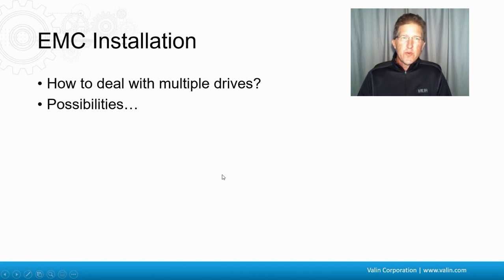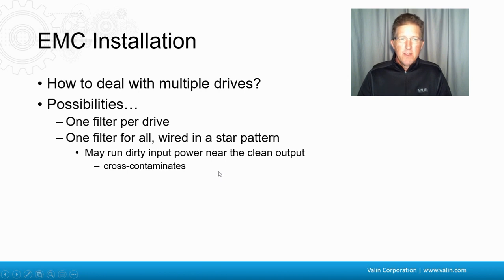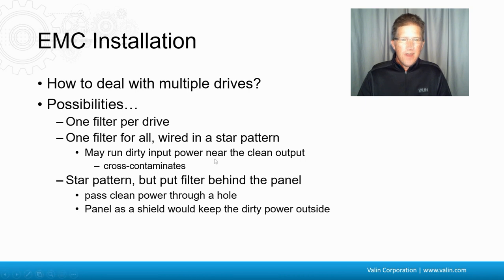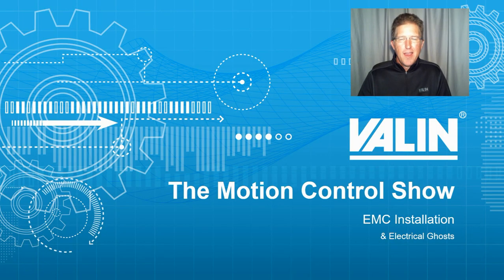If you have multiple drives, there are a couple of possibilities. One filter per drive can get expensive. Another option is one filter for all drives wired in a star pattern, but you may end up running dirty input power near clean outputs, which cross-contaminates. A good theoretical approach is wiring in a star pattern with the filter behind the panel, running clean power through a hole so the panel acts as a shield. Key dangers to be aware of: running high-power cables next to low-power cables — keep a significant gap or run them perpendicularly — and contaminating clean power with dirty. I've solved a lot of electrical noise issues just by doing a couple of these simple things.